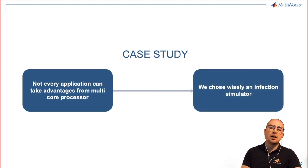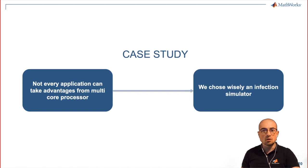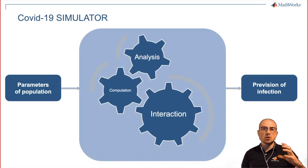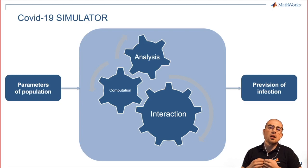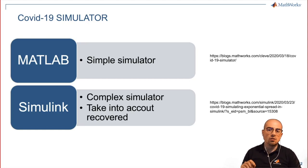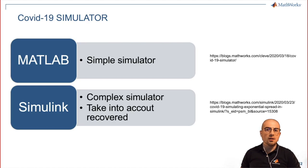In particular, how this simulator works: we give parameters of the population — we decide how the population behaves — into an engine that does some computation and computes the interaction between the different organisms inside this population. As output, we get a prediction. We decided to use two simulators. The first one, only with MATLAB, is a simple simulator developed by Cleve — you can find it on the link on the right side. The second simulator is a little bit more complex and takes into account the recovered after healing. You can find it on the MathWorks site. I suggest you to keep an eye on the MathWorks site because there are sometimes interesting new projects that can be useful for your school or business.